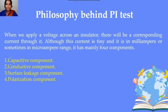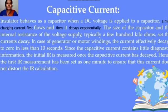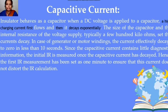When you apply a voltage across an insulator, a small current flows, contributed by four components: capacitive, conductive, surface leakage, and polarization. The capacitive component behaves like a capacitor — a high charging current flows initially and then decays exponentially. The size of the capacitor and the internal resistance of the DC supply sets the current to zero. For generator or motor windings, the capacitive current decays to zero in less than 10 seconds.